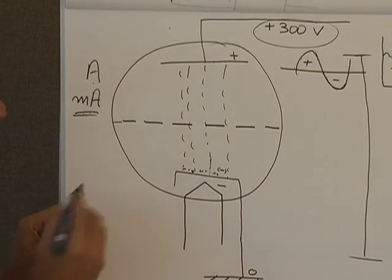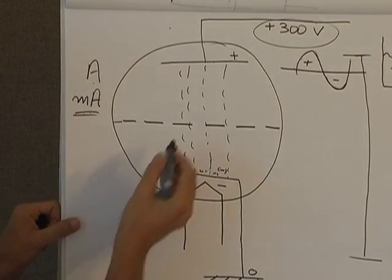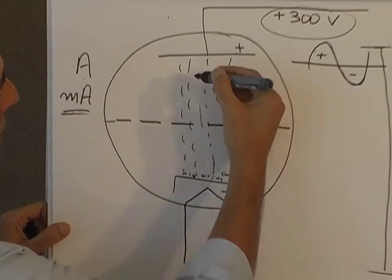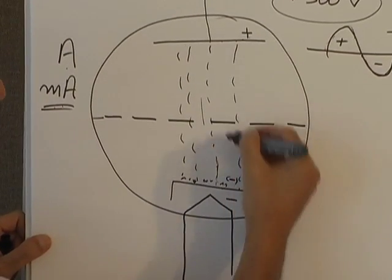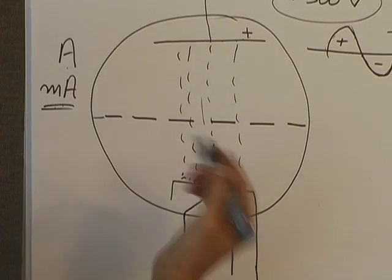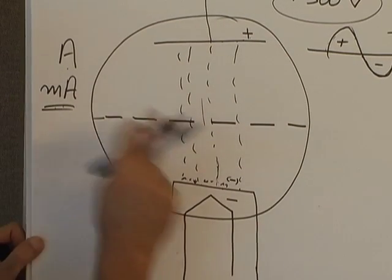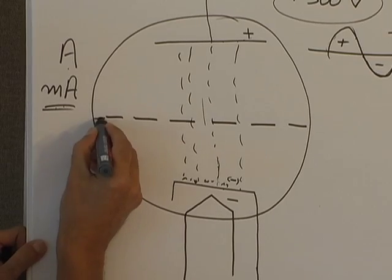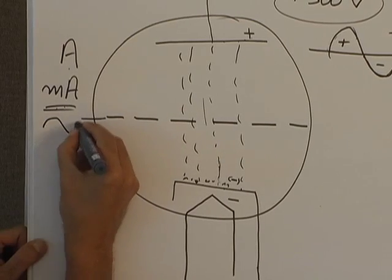The grid, as the name indicates, is a metallic mesh that permits the current of the electrons through it. But its function is to control the flow of this electron. And that's where we apply the music signal.